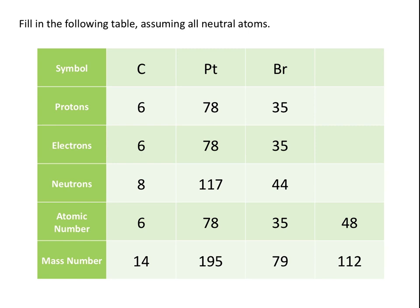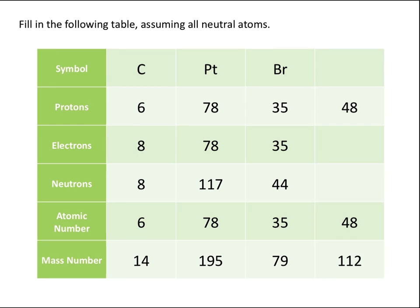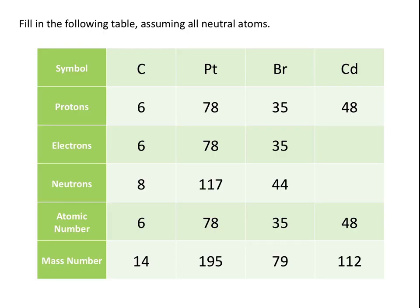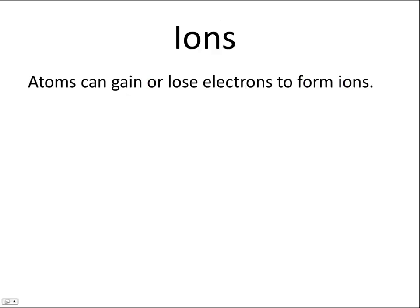In our last example of this table, the element with atomic number 48 must have 48 protons. Looking up atomic number 48 on the periodic table, we see that this element is cadmium, with the elemental symbol Cd. Because we are assuming all neutral atoms, if cadmium has 48 protons it must also have 48 electrons. The number of neutrons equals the mass number, 112, minus the atomic number, 48, which means this isotope of cadmium has 64 neutrons.